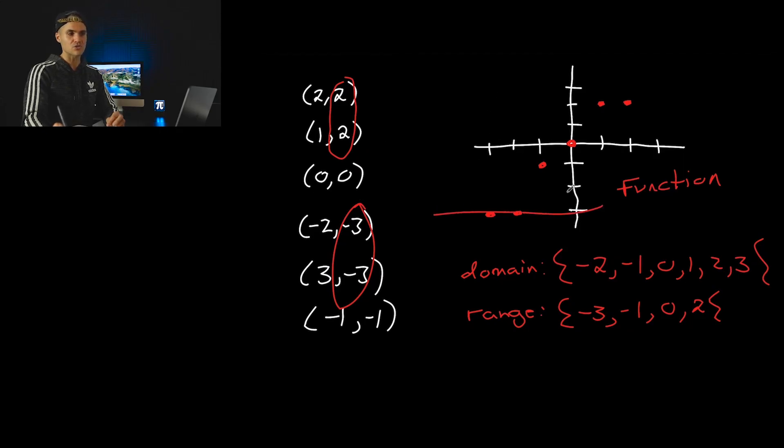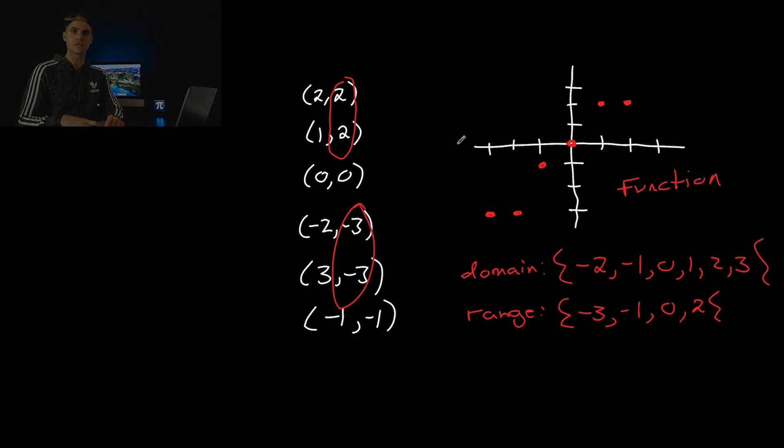Because sometimes if you look at that and you see that pair right there of twos or this pair of negative threes, you may think incorrectly that it's not a function, but when you actually plot it, you would notice that it's not a horizontal line test. It's a vertical line test that tests whether a relation is a function or not. So highly recommend drawing graphs, especially on your test, just to be sure.